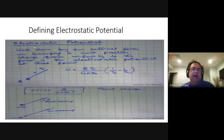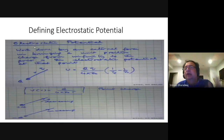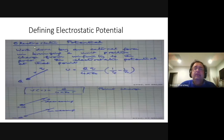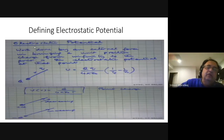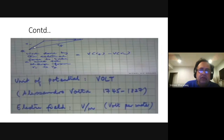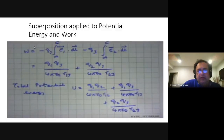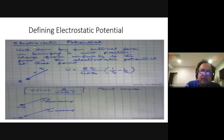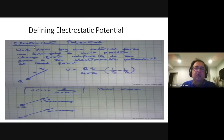Electrostatic potential is the work done to bring a unit charge from infinity to that point. The electric field is the force experienced by a unit charge — that was force. Here, it is the work done on a unit charge to bring it from infinity to that particular point. Electric field is dV/dr, so its units are volts per meter. Volt is joules per coulomb — work done per unit charge. Electric field is also newtons per coulomb.